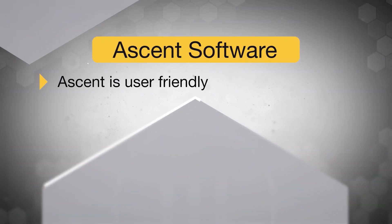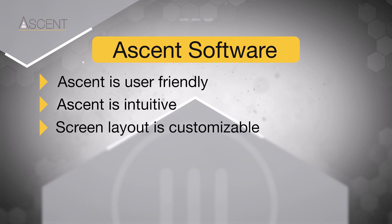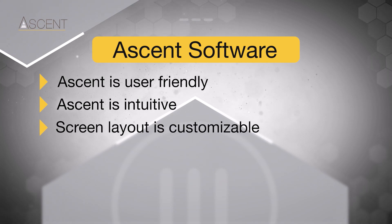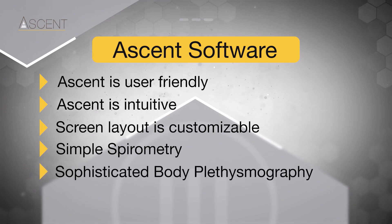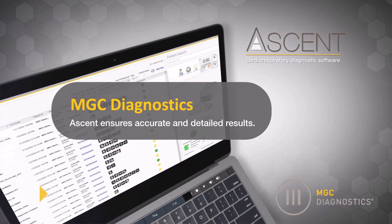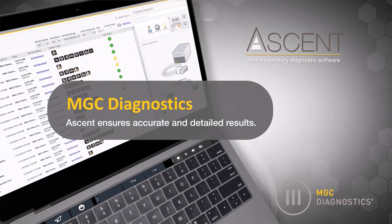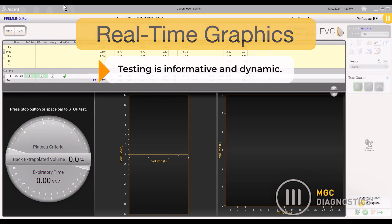Ascent software is not just user-friendly, it's intuitive, allowing clinicians to customize screens based on their preferences. From simple spirometry to sophisticated body plethysmography and complete CPET testing, Ascent ensures accurate and detailed results. Real-time graphics enable clinicians to coach patients for optimal effort, making testing informative and dynamic.